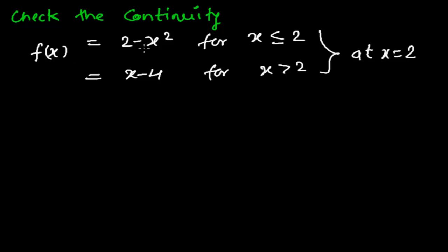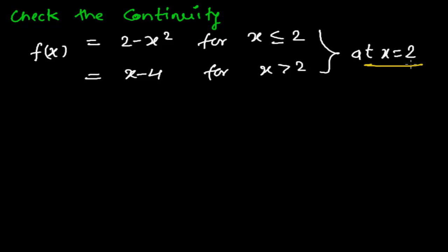Now we are learning to check continuity with an example. Here is a function f(x) which equals 2 minus x squared for all x values less than or equal to 2, and x minus 4 for all values of x greater than 2. We need to check the continuity at x equals 2.